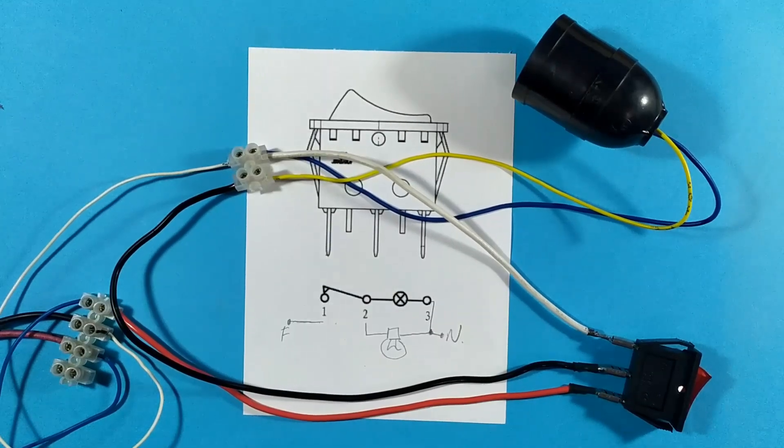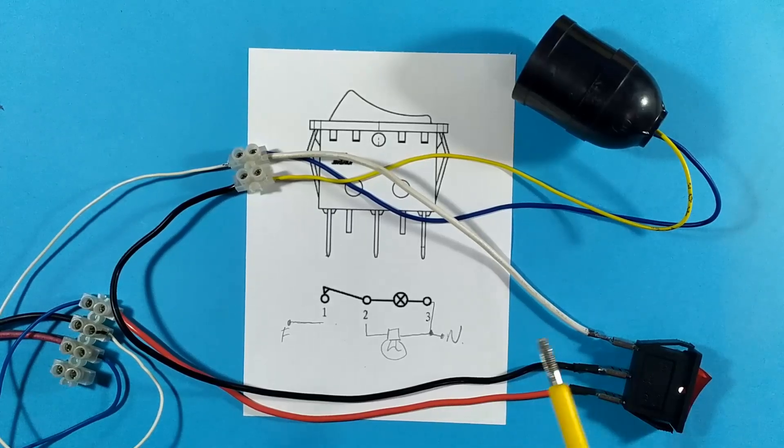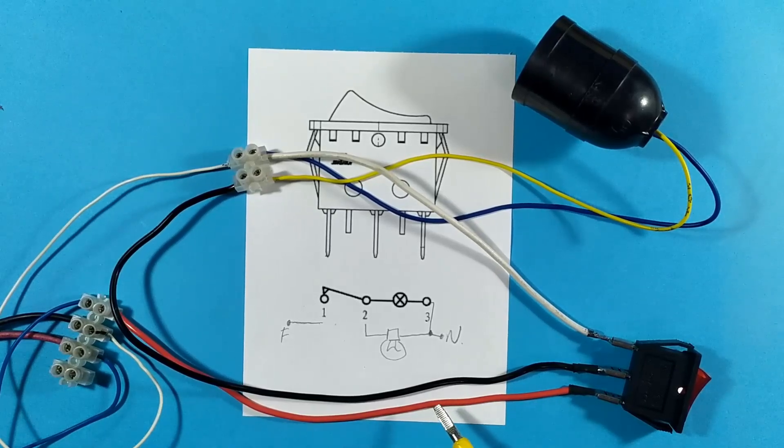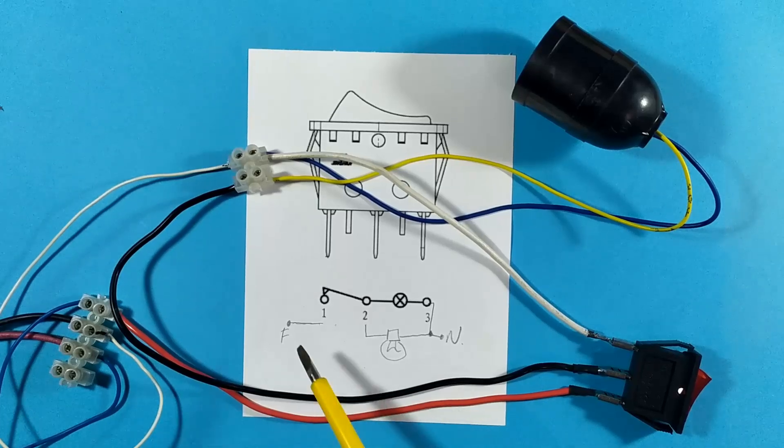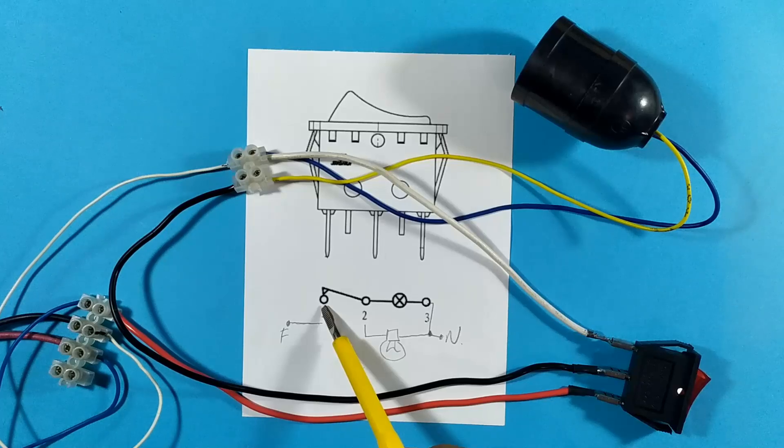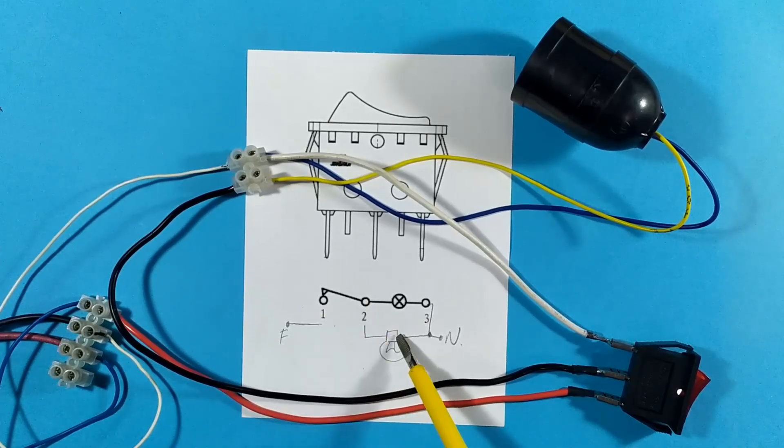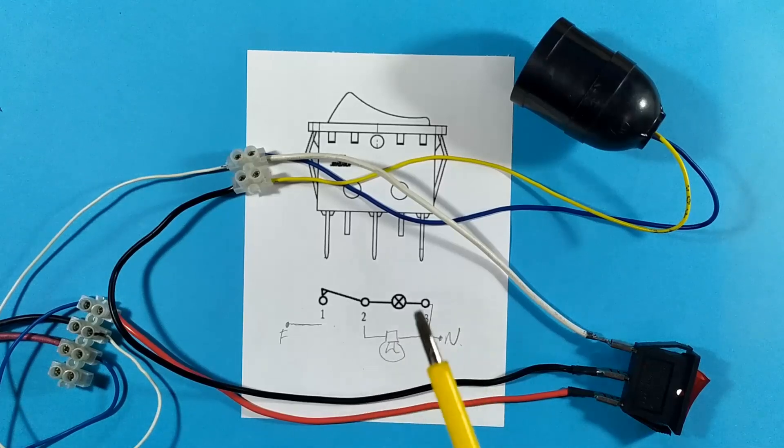Very well. The connections are already made, but there are quite a few cables. Still, don't be scared. Let's see how the connections are. As seen, I have to connect phase to one end of the switch, and from this you will have to go to pin 2, and from there it will be connected to the bulb in neutral.